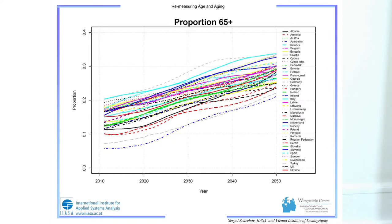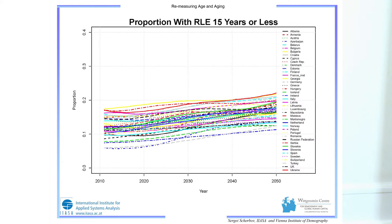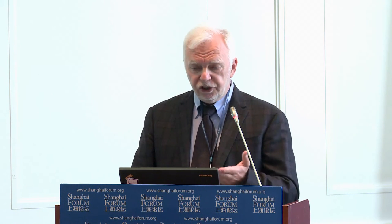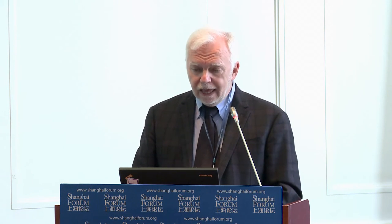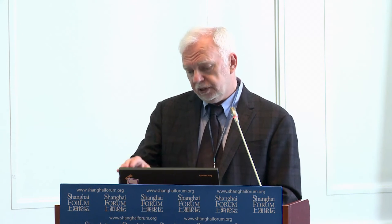For European country projections, the proportion aged 65 plus looks very different from the proportion with remaining life expectancy of 15 years or less. Similarly, the traditional old age dependency ratio rises sharply, while the prospective old age dependency ratio remains almost constant.